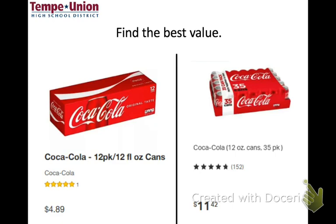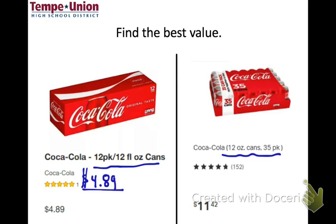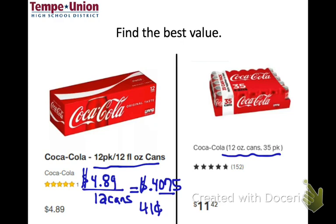Because both options are in terms of cans, I would figure out how much it costs per can. I'd take the cost of $4.89 and divide by 12 cans. That gives $4.89 ÷ 12 = $0.4075, which rounds to about $0.41 per can.